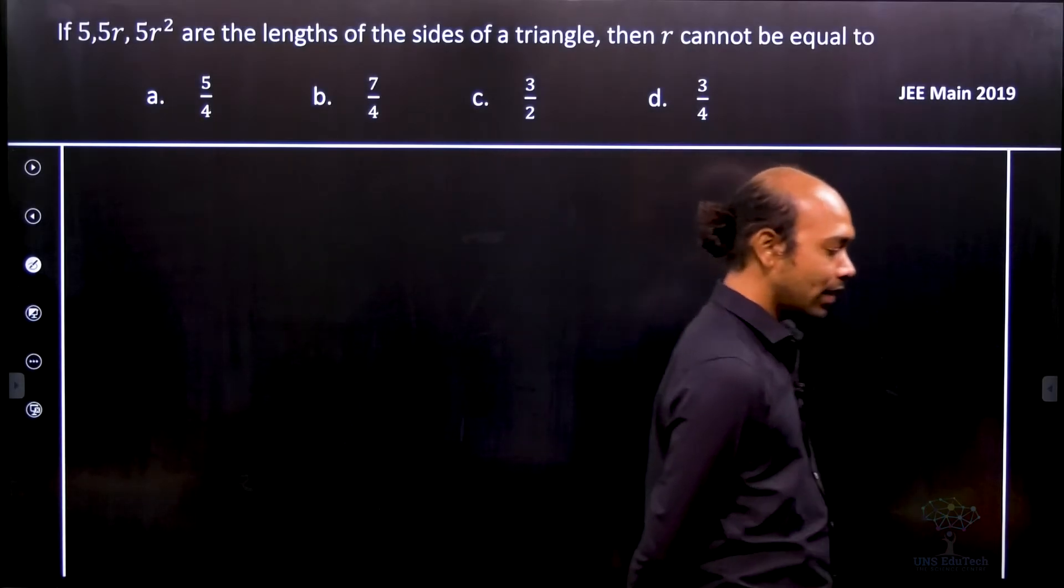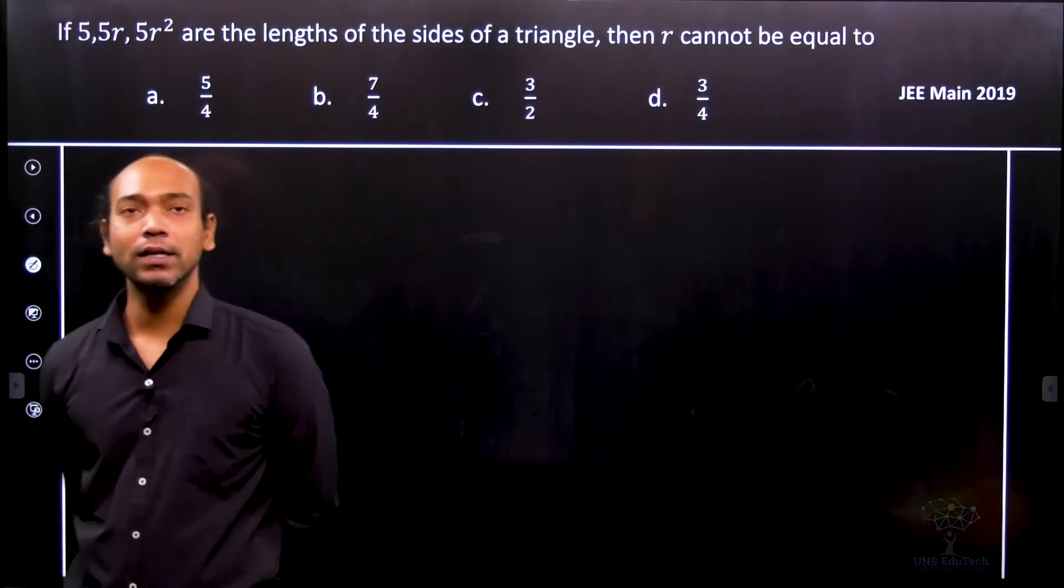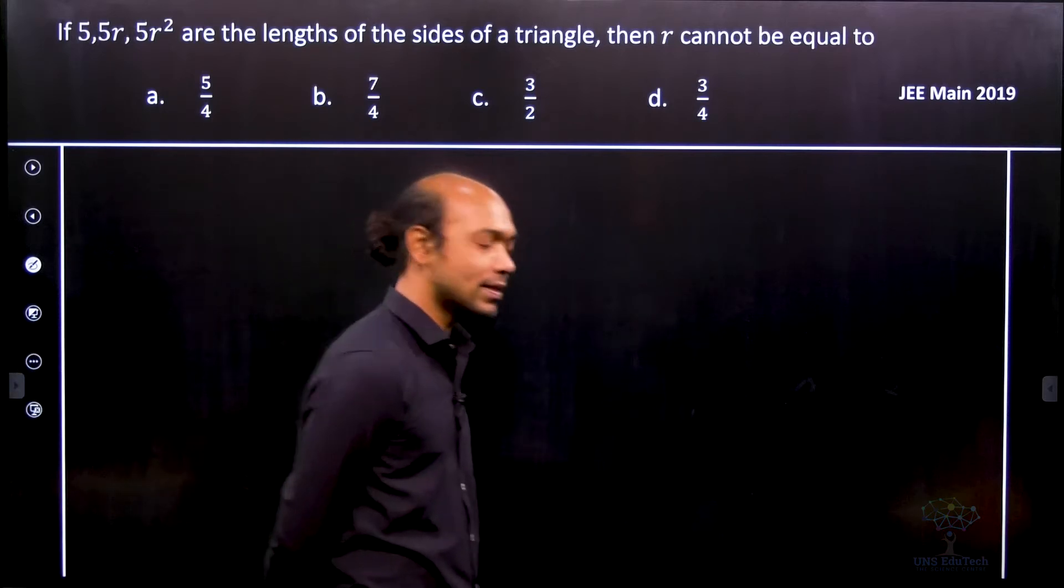Hi, in this problem it is given that 5, 5r, and 5r² are the lengths of the sides of a triangle.